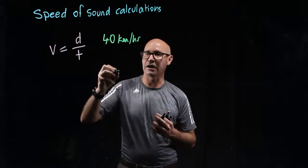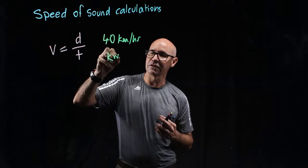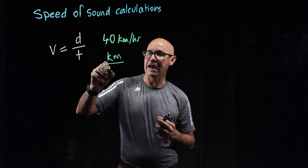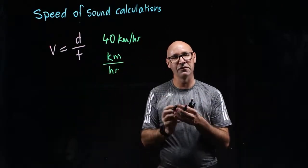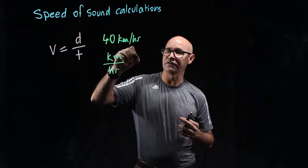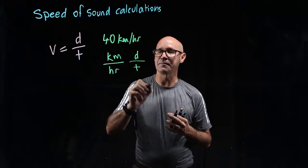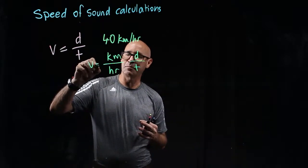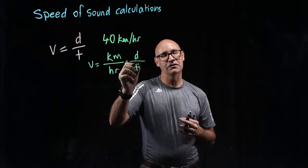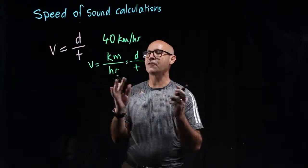Well per is actually divided by, so it's kilometres divided by hours. Now kilometres is obviously a measure of distance, and an hour is obviously a measure of time. So speed is distance divided by time, that's how I remember it.